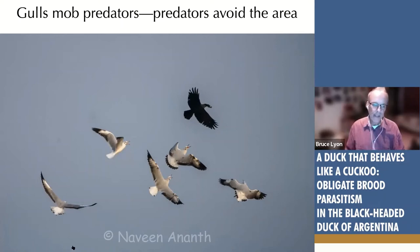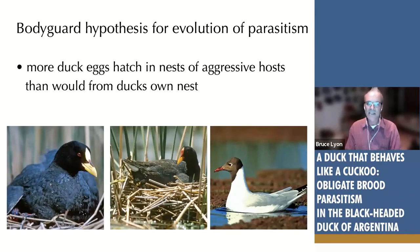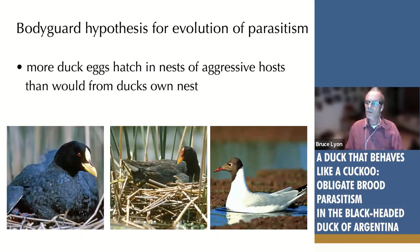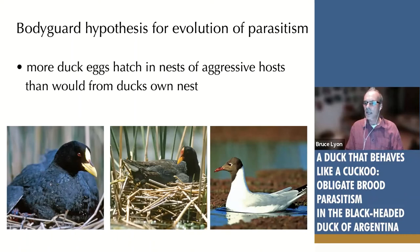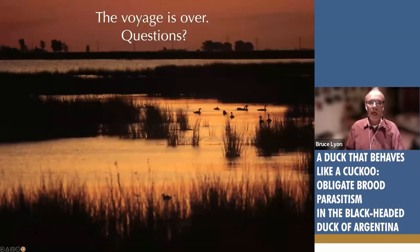That's our bodyguard hypothesis for the evolution of brood parasitism in this bird. The idea is that more duck eggs will hatch in nests of aggressive hosts than from a duck's own nest. Yes, some eggs get kicked out by the host, but these hosts are so good at protecting nests that even despite egg rejection, you still might have an advantage by laying in bodyguard species rather than nesting on your own. The ducks have evolutionarily lost the option of nesting themselves — what we're saying is that this may have been the factor causing natural selection to favor always having eggs in others' nests.